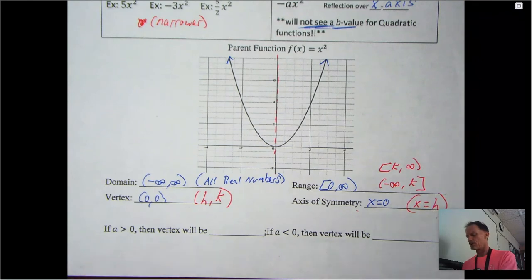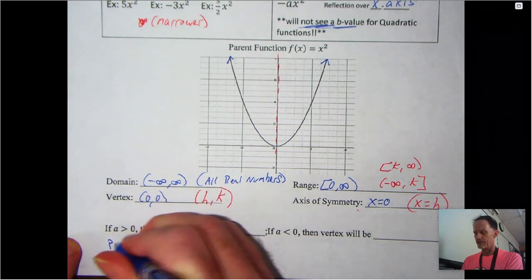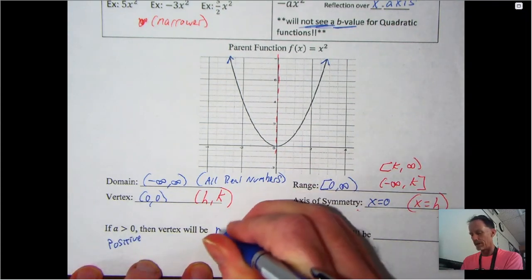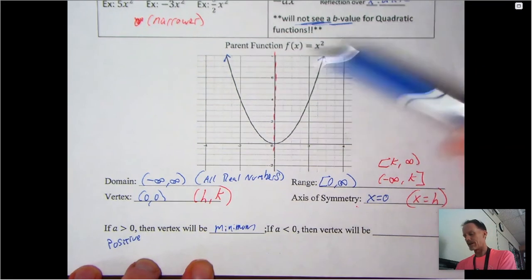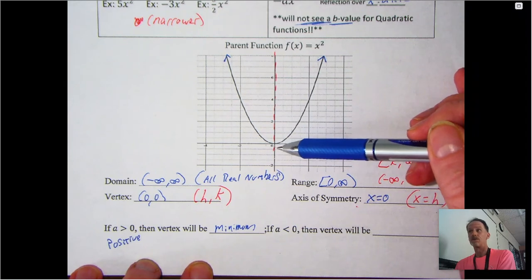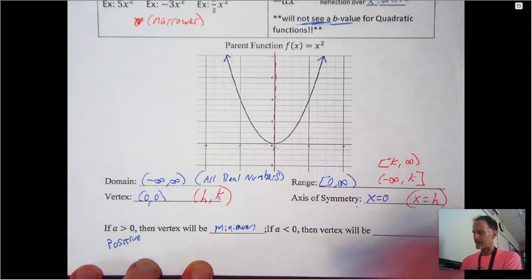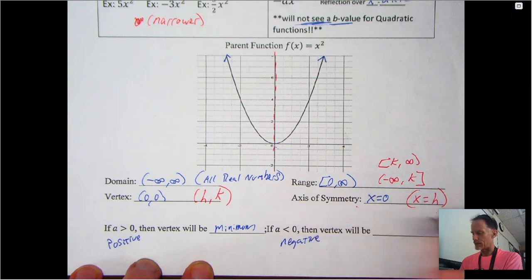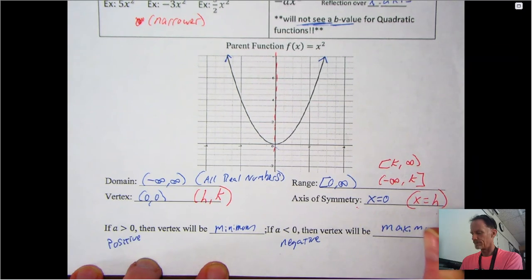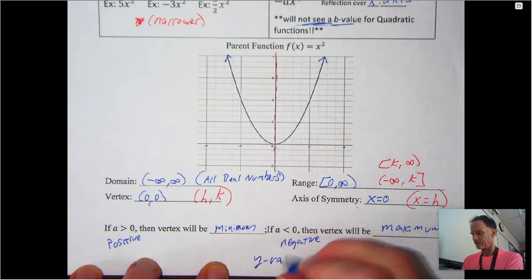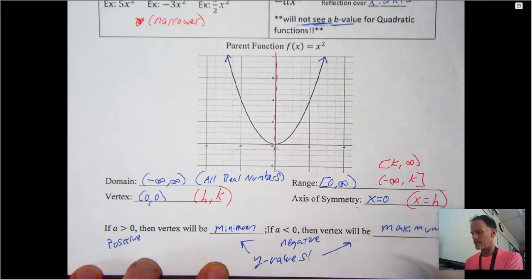One more attribute: if the a value is positive, the vertex is a minimum point — it's the lowest the graph reaches. If a is negative, the vertex is a maximum point. When we talk about minimum and maximum values, we refer to the y-values, and we'll get into that with the examples.